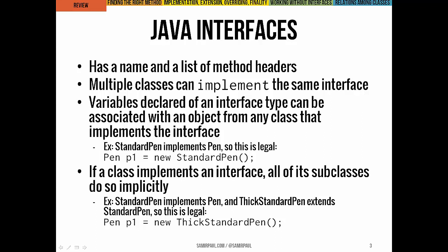More than one class can be a shape. It's important to note that if a variable is declared to be of an interface type, we can associate that variable with an object of any class that implements that interface. For example, if you make a pen variable, you can point it at a standard pen, a wiggle pen, a rainbow pen — any class that implements that interface.